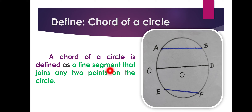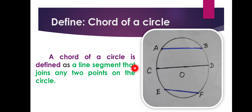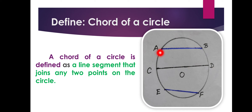But a chord joins any two points on the circle. Compare: radius is the line segment that joins the center and any point on the circle, but a chord is a line segment that joins any two points on the circle.